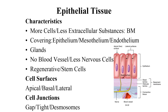Epithelial tissues have unique characteristics that distinguish them from other tissue types under the microscope. They have more cells and very little extracellular substance. Cells are bound closely together with very little interstitial space between them. The extracellular material is only present as a thin, tape-like layer on which cells reside, called the basement membrane.